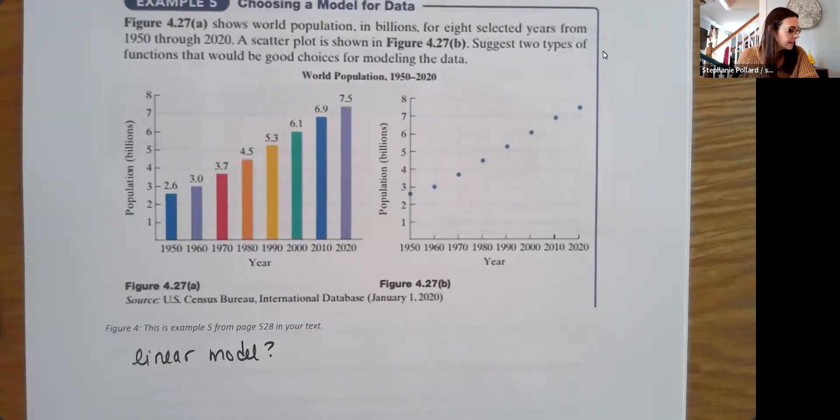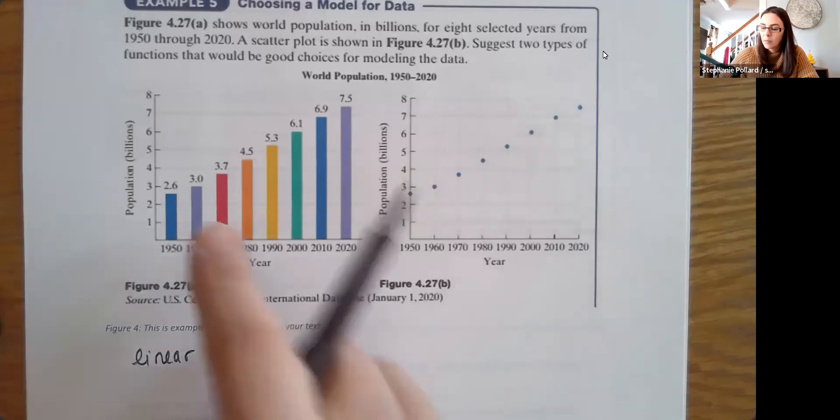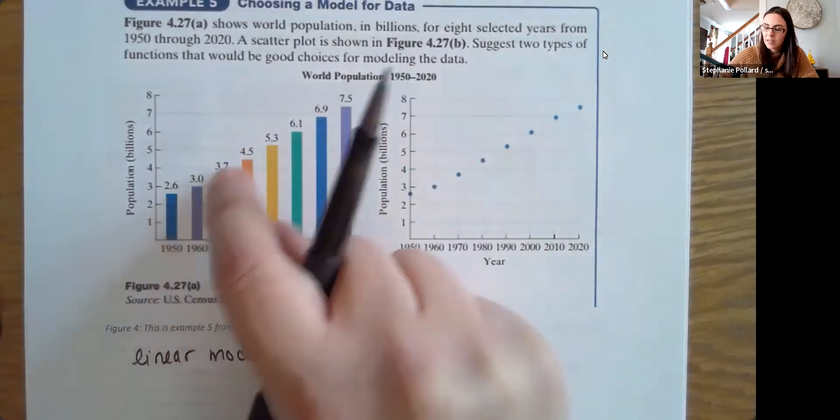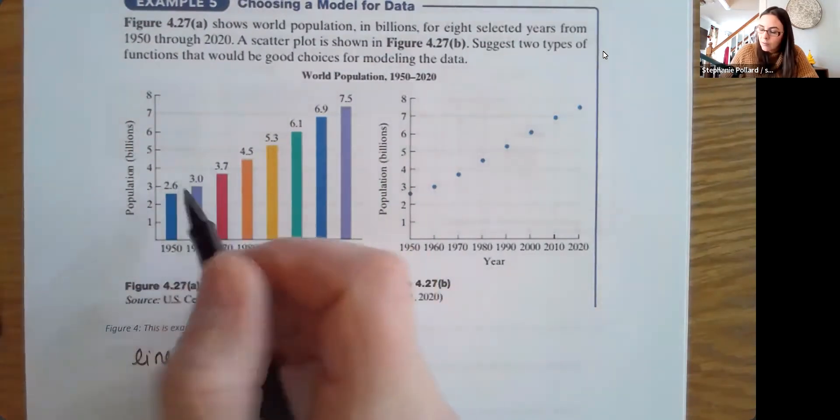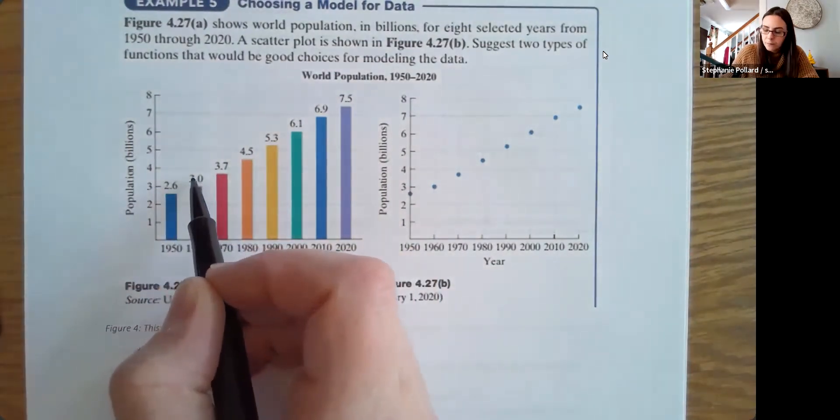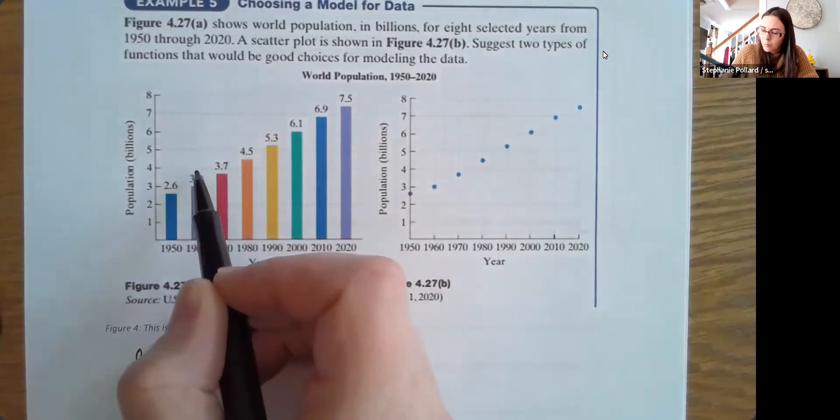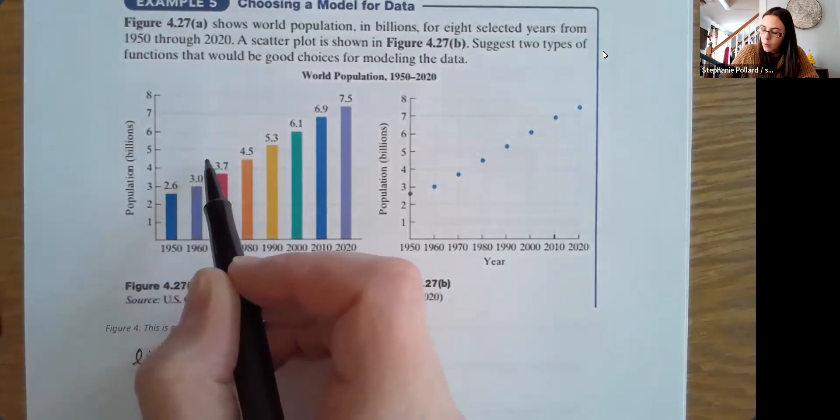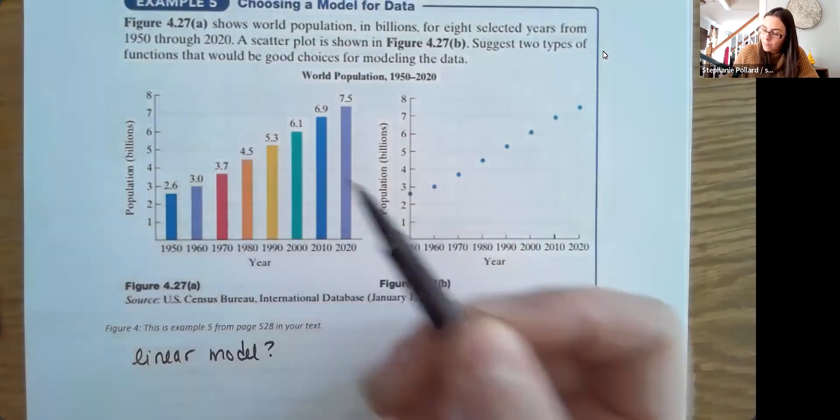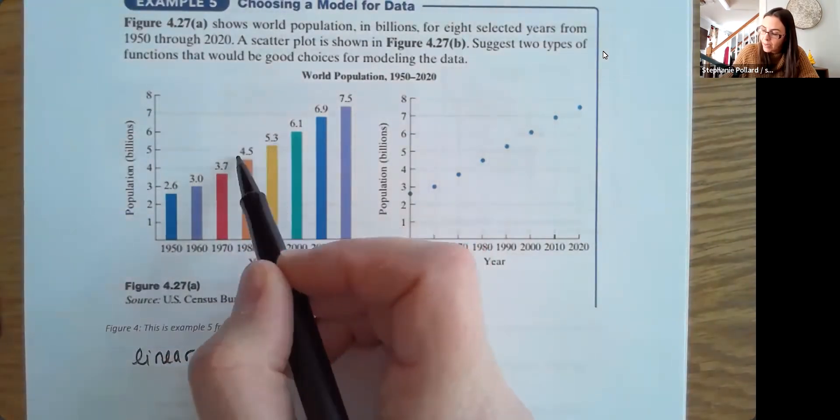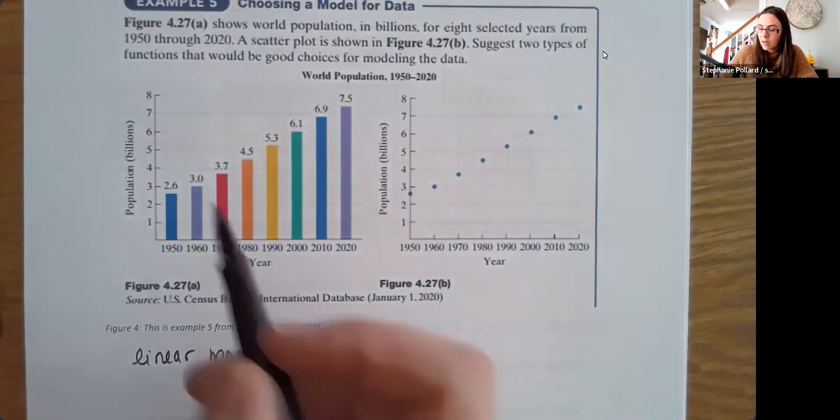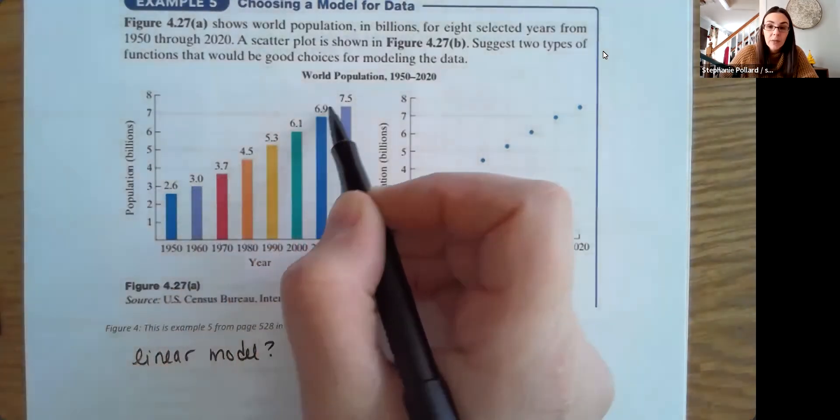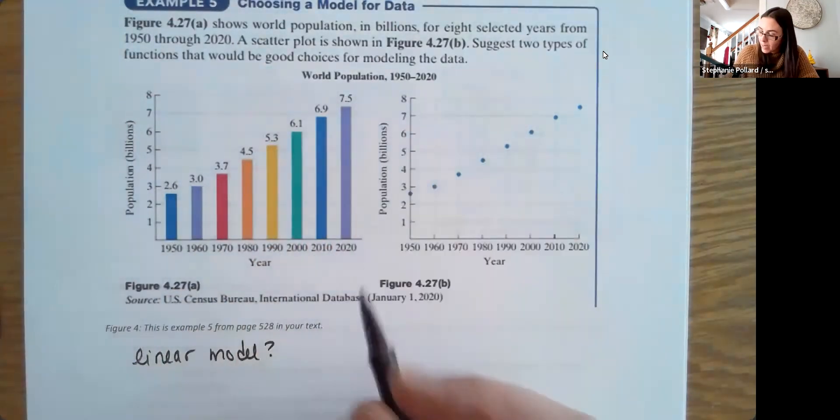The other one that is suggested from your text is potentially an exponential model. And actually, you can see that, I think, a little bit easier with the bar graph. It does look like it's not perfectly straight. It does look like there's a little bit of a curve here with increasing. And if you look at your values from 2.6 to 3.0, that's a change of 0.4. Then we're going from a change to 0.7. Then we're going from a change to 0.8. Then I have another change of 0.8, 0.8, 0.8, 0.6. So it's not quite linear. It seems like it kind of starts increasing slower and then starts increasing a bit faster. So maybe some sort of exponential model would work.